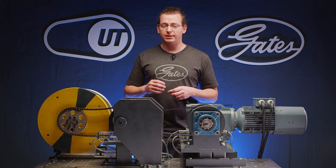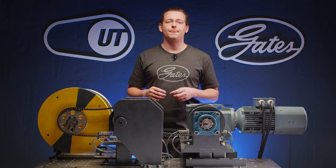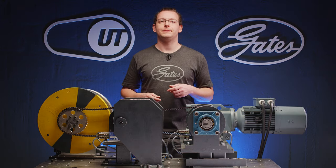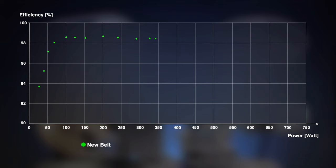After we calculated every single measurement point, we can combine them to one graph as we can see it here. Now what we have here is a complete figure of the efficiency factor of our new belt drive at any given power rate. We can see a very typical curve for any mechanical transmission with lower efficiency level at low power rates and increasing efficiency at higher power rates.